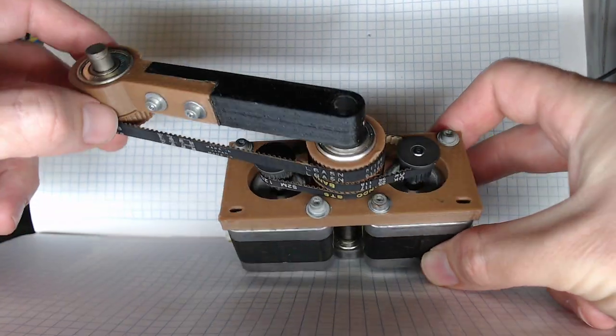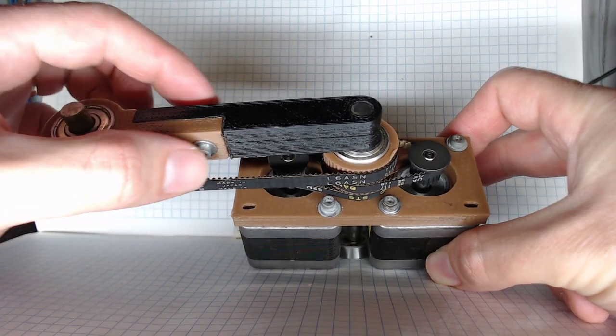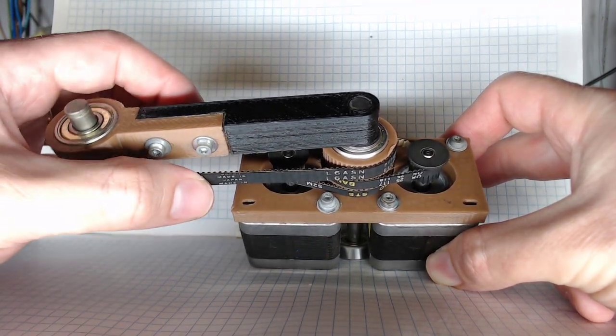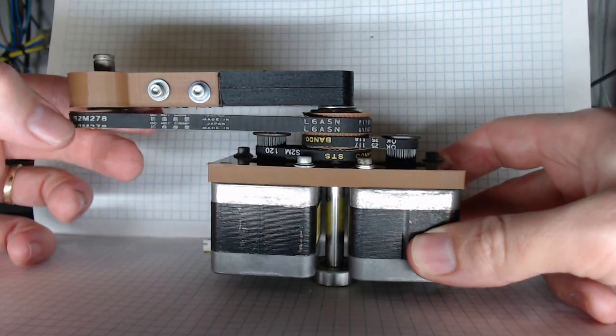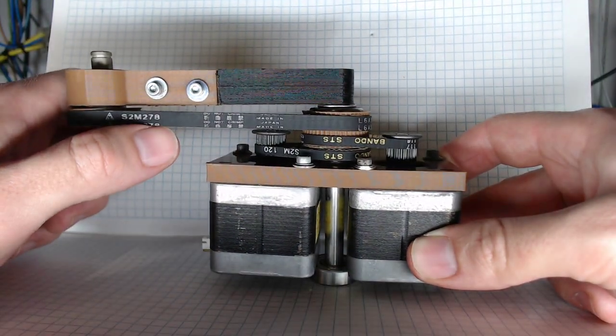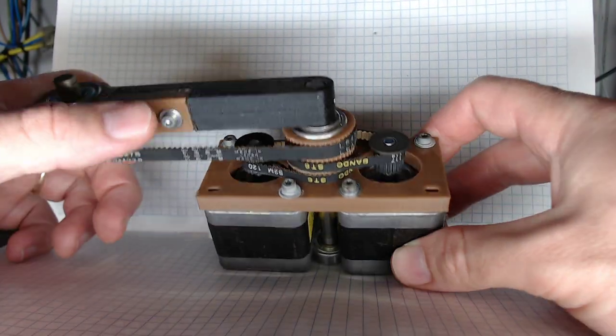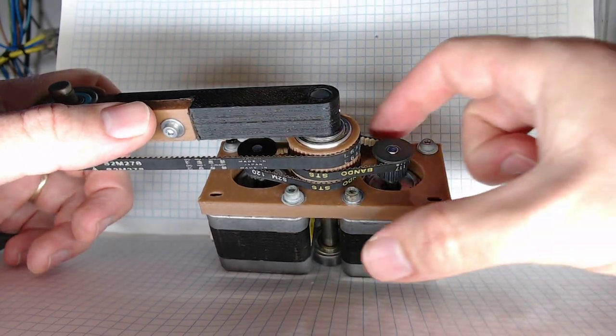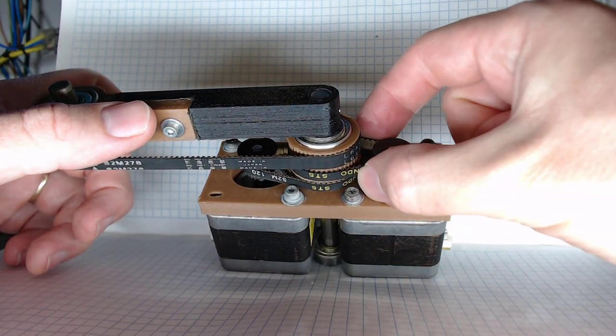You can vary arm 1's length by slacking off these, and those are in slotted holes so you can make the arm shorter or longer to get this belt tension right if you don't have exactly a 278mm long belt. Likewise, these holes are slotted so you can move the steppers in and out to get the belt tension right here.